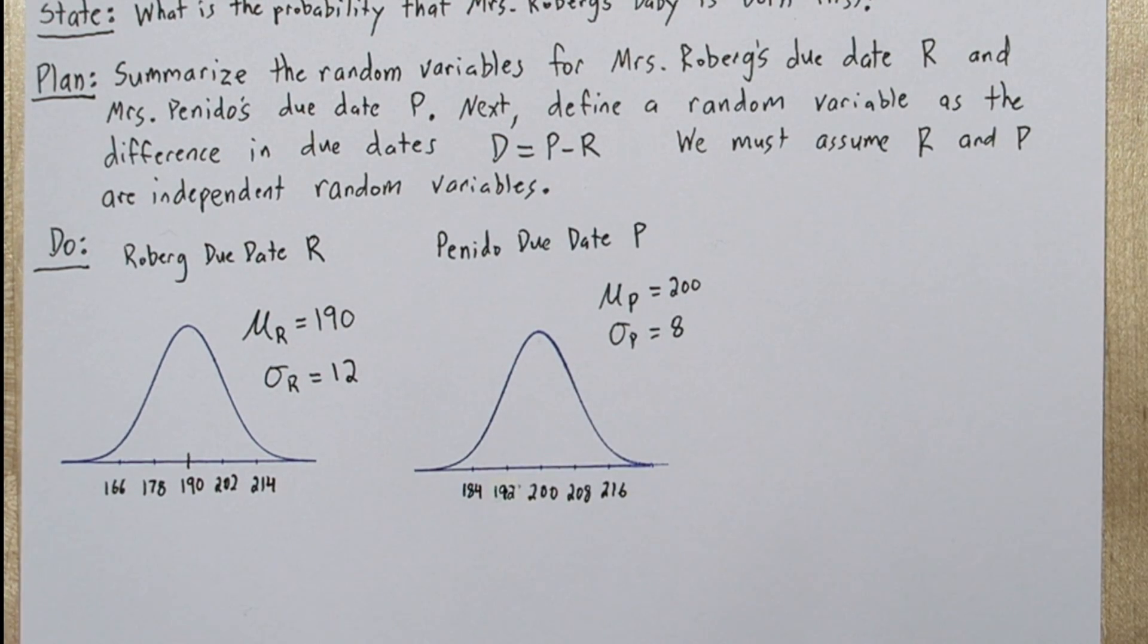When we look at these side by side, we see a lot of possibilities for either baby to be born first. The Roeberg baby is more likely to be born first because its mean is earlier in the year.